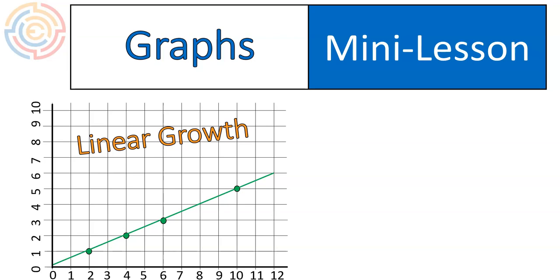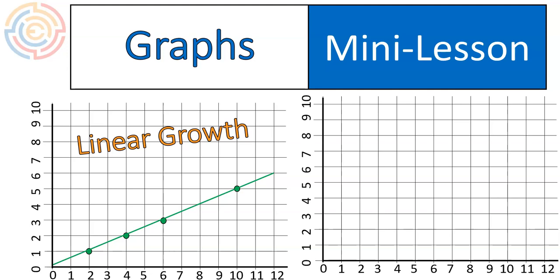Anything that has a consistent growth, and that consistent growth is called slope. Oh no, another math term. Don't worry about it, though, because we're going to now go over to this graph where we actually make our growth a little bit different.